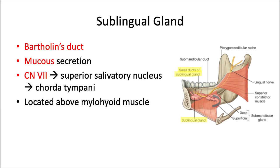Lastly, we have the smallest of the three, the sublingual gland. The sublingual duct is technically a collection of small ducts called the ducts of Rivinus (R-I-V-I-N-U-S), of which Bartholin's duct is the largest. This one opens directly onto the floor of the mouth at the sublingual caruncles. It produces mostly mucous secretion, and just like the submandibular gland, it's powered by cranial nerve 7 via a similar nerve pathway. It's located purely above the mylohyoid muscle at the anterior floor of the mouth.